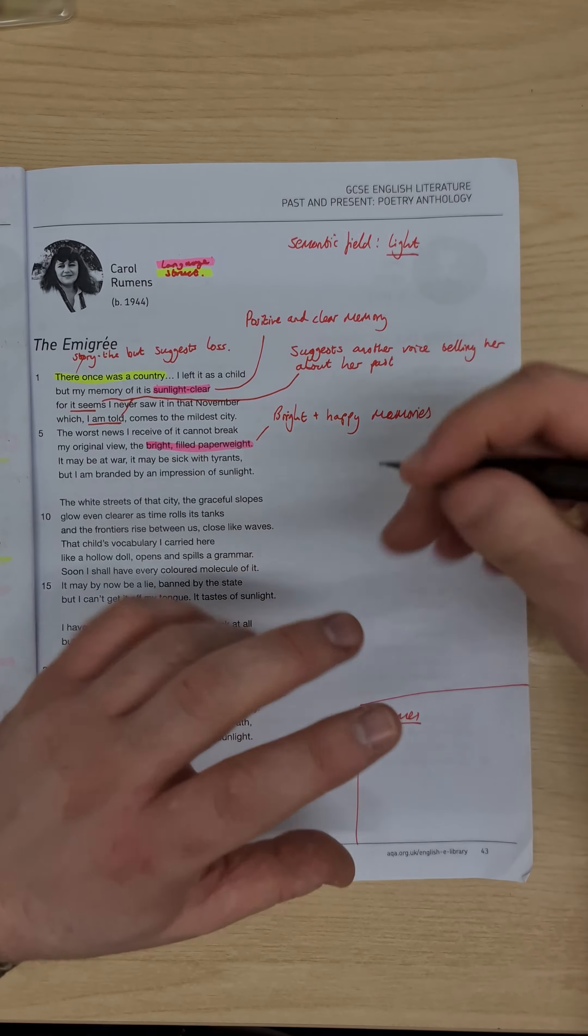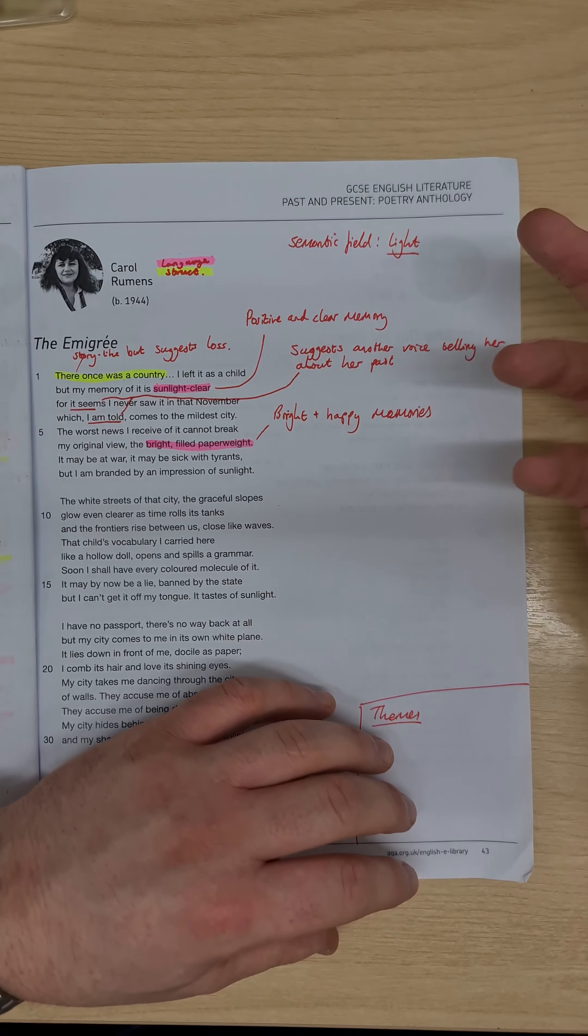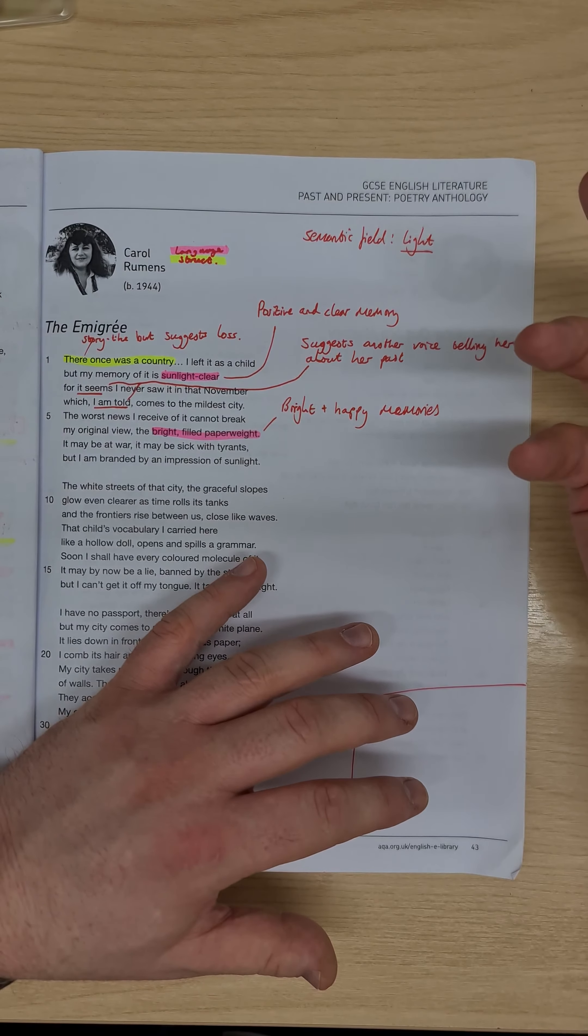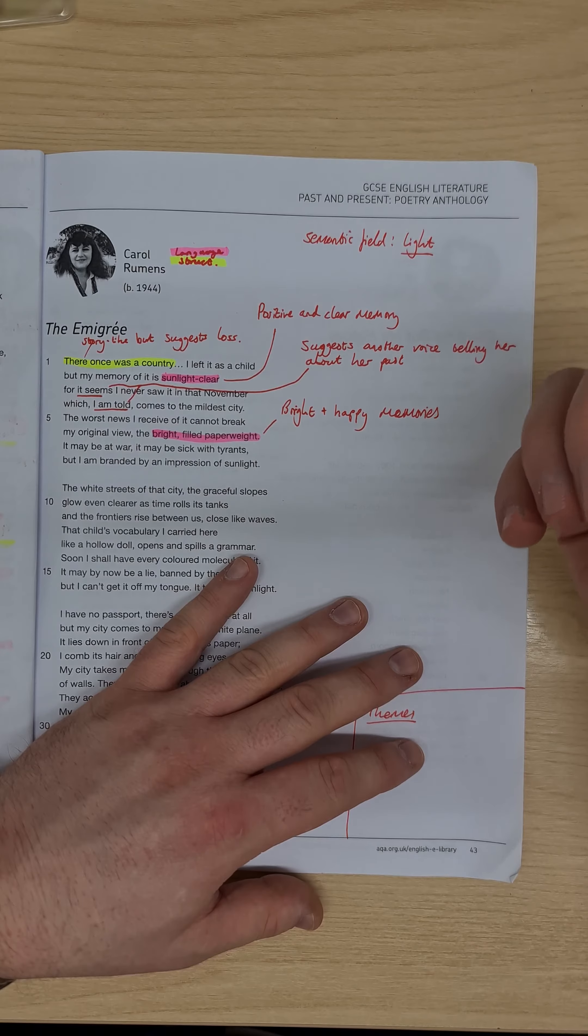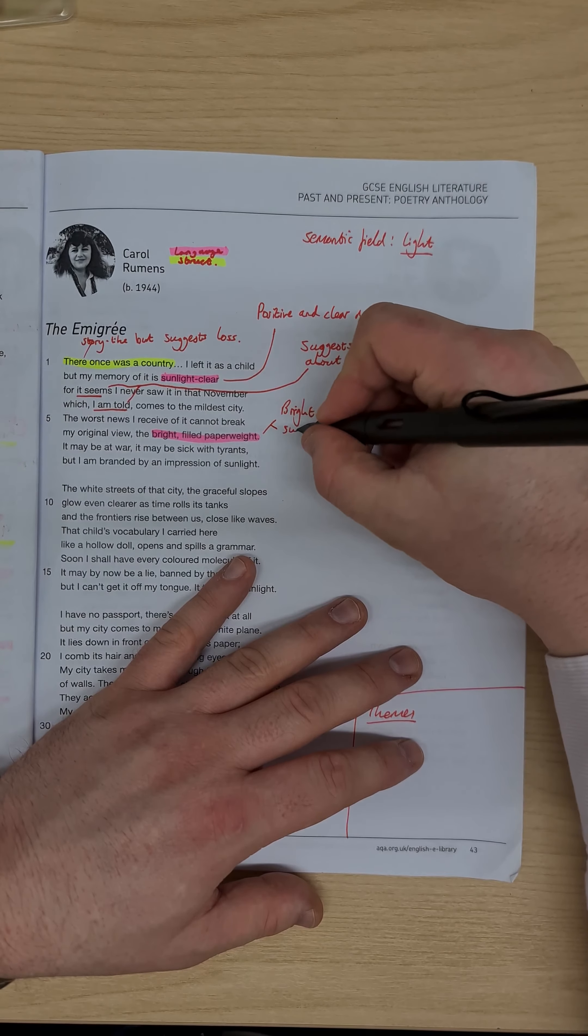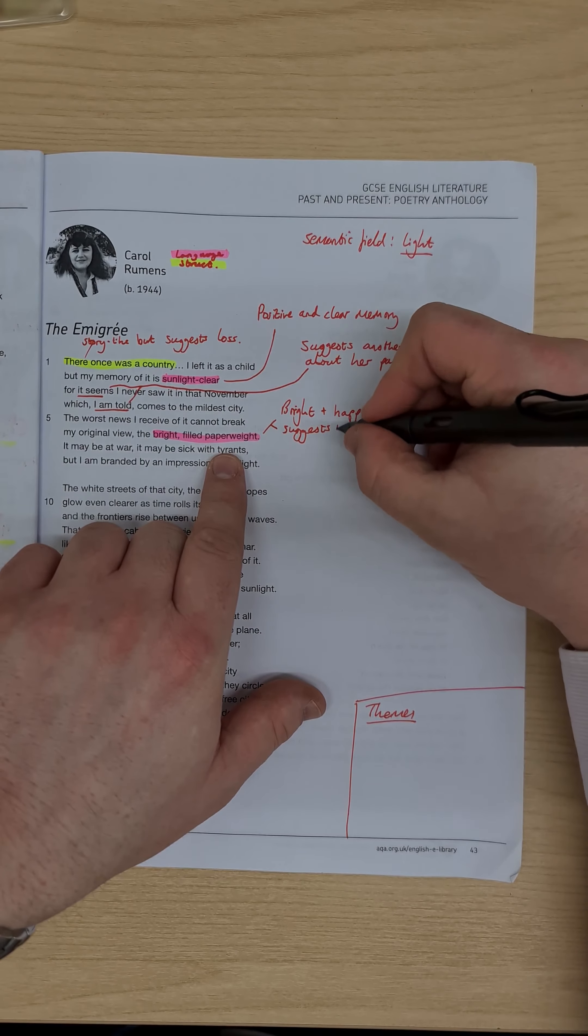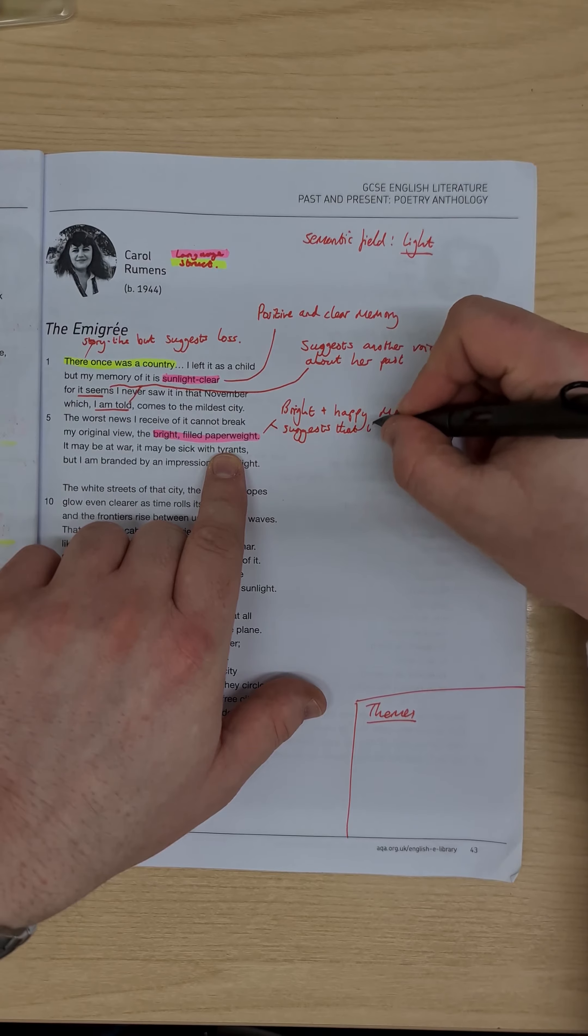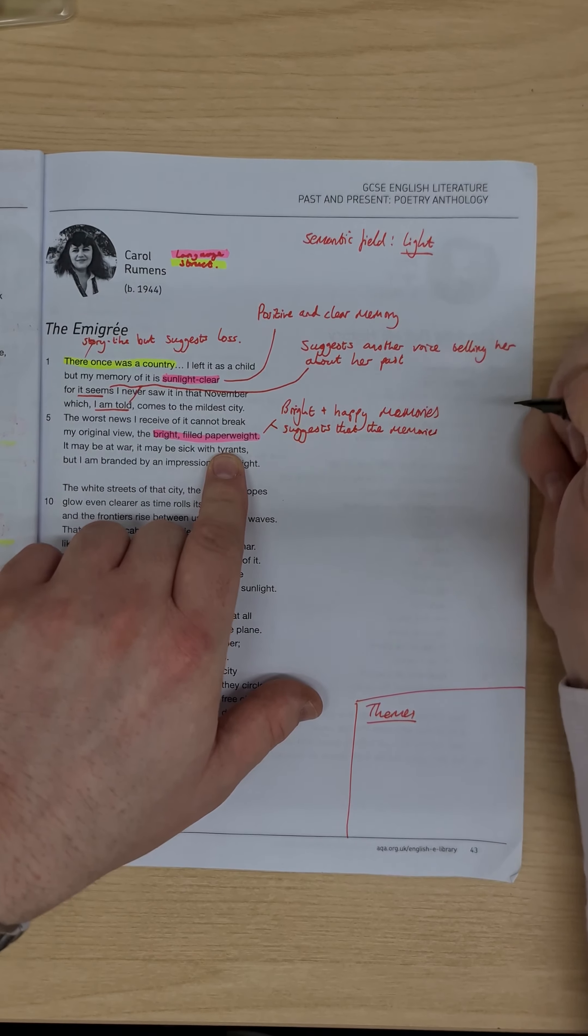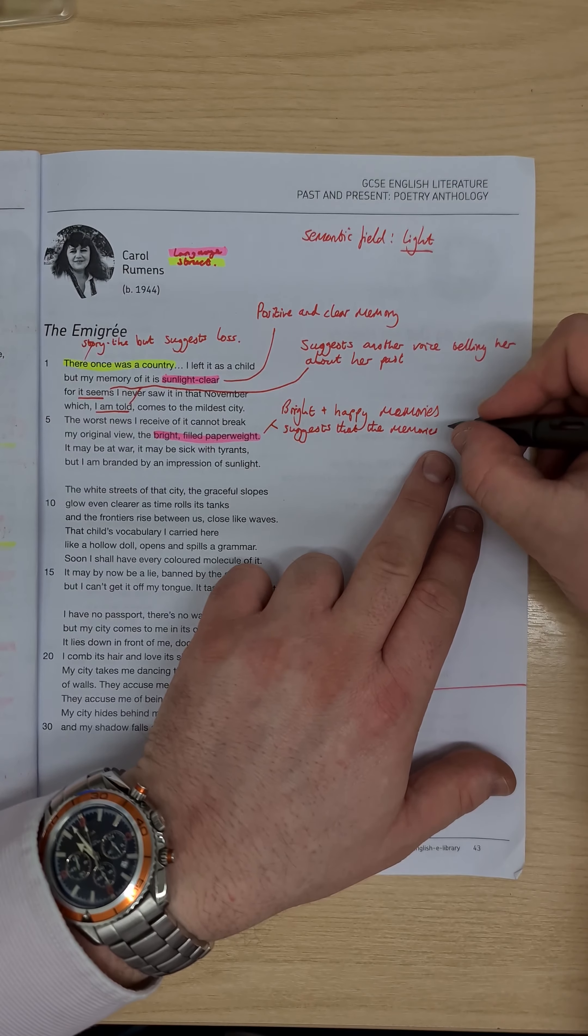It suggests a childlike innocence almost, that while she was in the city, where all these horrible things were going on, that she only saw the good things. As well as the bright and happy memories, it also suggests, because it's a paperweight, suggests that the memories, in a way that they're almost solid and fixed, that they can't be changed.